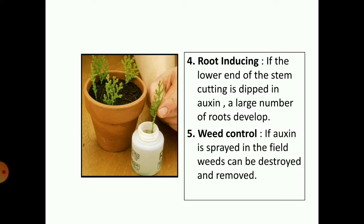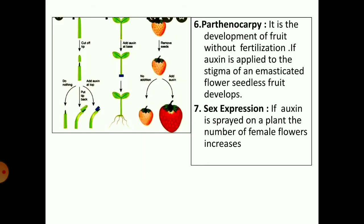Weed control: weeds are unwanted plants found in the field — if auxins are sprayed, the weeds can be destroyed and removed. Parthenocarpy: it is the development of fruit without fertilization. If auxin is applied to the stigma of an emasculated flower, seedless fruits develop. Emasculated means a flower in which the stamens have been removed. Sex expression: if auxin is sprayed on a plant, the number of female flowers increases — that is, it brings about femaleness in plants.